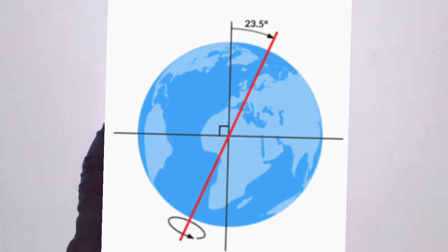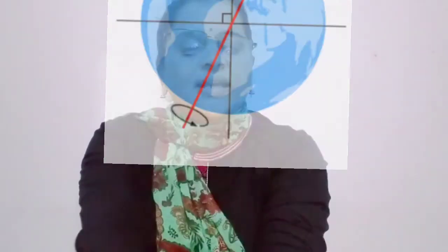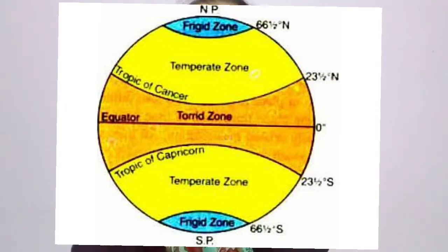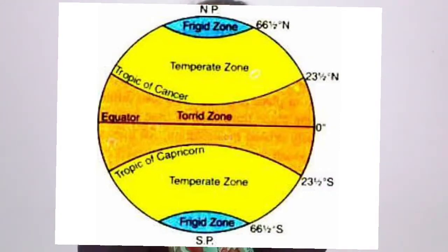Due to the inclined axis and variation in duration and intensity of sunlight, different temperature zones are formed on Earth. These are the Torrid zone, Temperate zone, and Frigid zone. The Torrid zone extends up to 23 degree 30 minutes north and 23 degree 30 minutes south, where sunrays fall perpendicular, making it a very hot area.